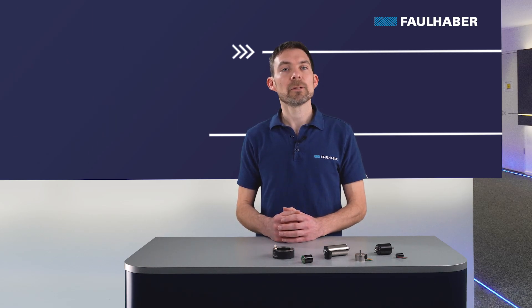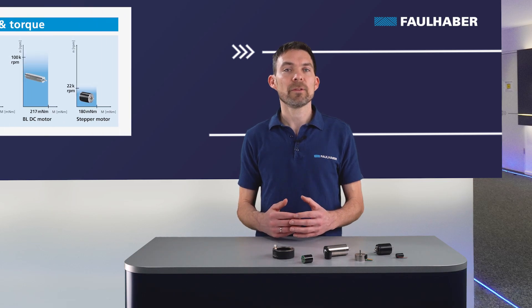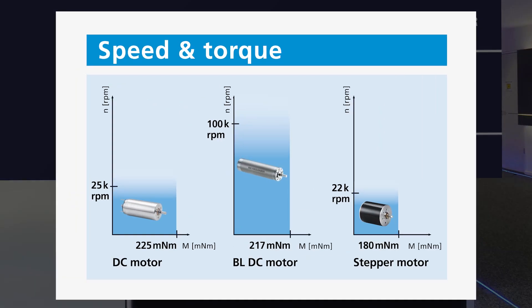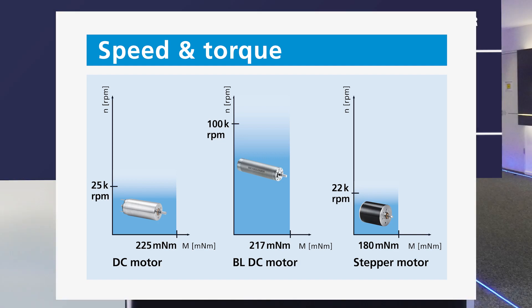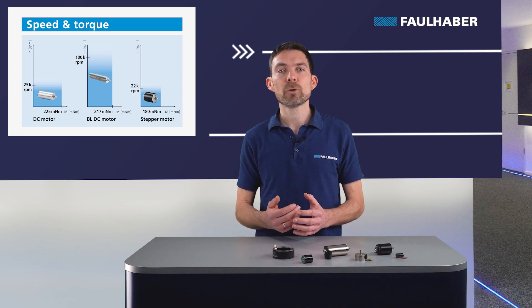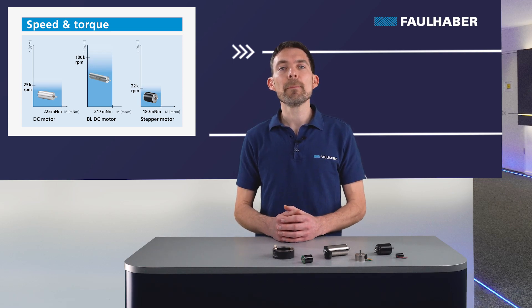Another important criterion for selecting motor technology is the speed and torque range needed in the application. If the application requires a lower speed range — for example five to eight thousand rpm — then a DC motor or a stepper motor are most suitable. On the other hand, if you need speeds up to seventy thousand rpm, then a brushless DC motor is the one to choose. In case you need higher torque and/or lower speeds, you can think about adding a gear head. For more details, you can have a look at our how-to video for gear heads.